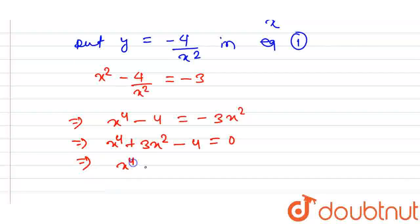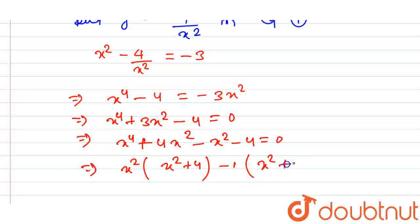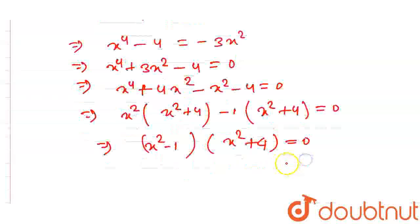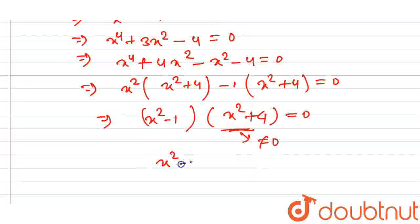We can rewrite this as x to the power 4 plus 4x squared minus x squared minus 4 equals 0. Taking x squared common from the first two terms and minus 1 from the last two gives x squared times (x squared plus 4) minus 1 times (x squared plus 4) equals 0, so (x squared minus 1)(x squared plus 4) equals 0. Since x squared plus 4 can never be zero, we get x squared minus 1 equals 0, giving x equals plus or minus 1.